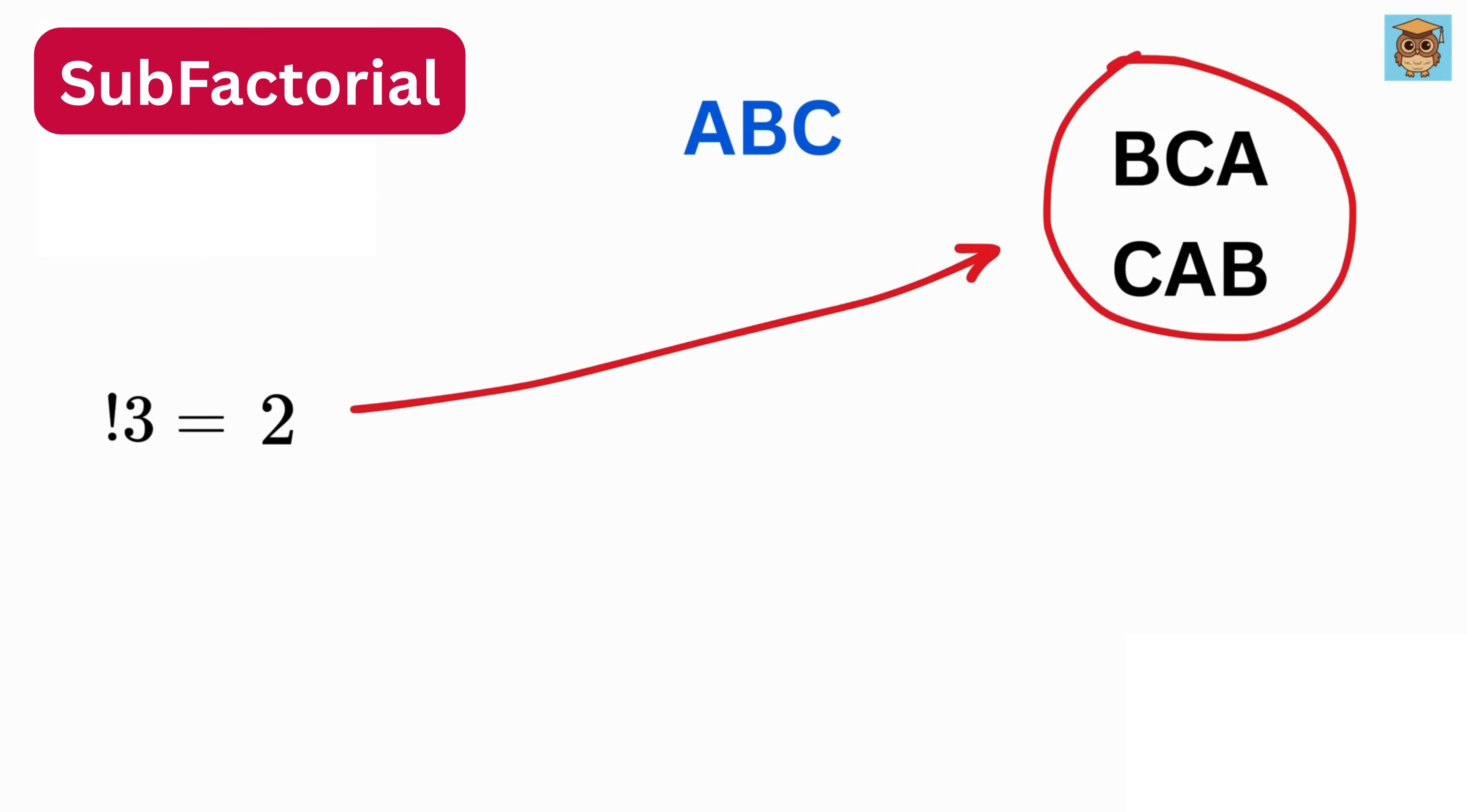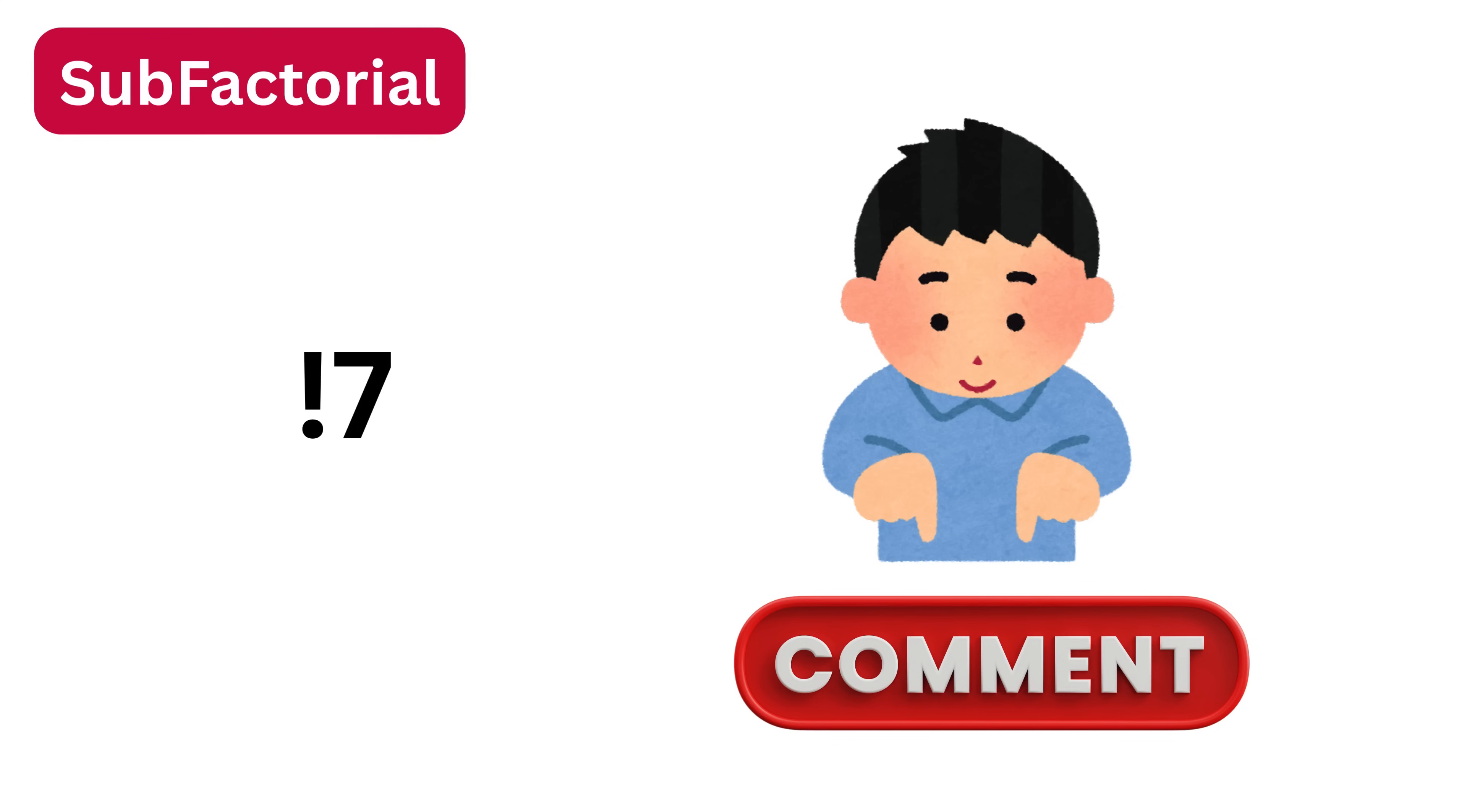That means the subfactorial of 3 is 2. This tells us that there are two ways to arrange three items in such a way that none of them remains in their original place. This kind of arrangement is called a derangement. Okay, let me know in the comments what will be the subfactorial of 7.